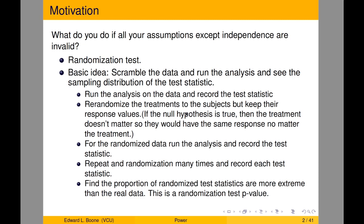If you have invalid assumptions, or you just don't want to make any assumptions other than independence of your observations, you can do the randomization test. If you're looking for the difference between two groups, ANOVA — all of these can be boiled down to a randomization test.